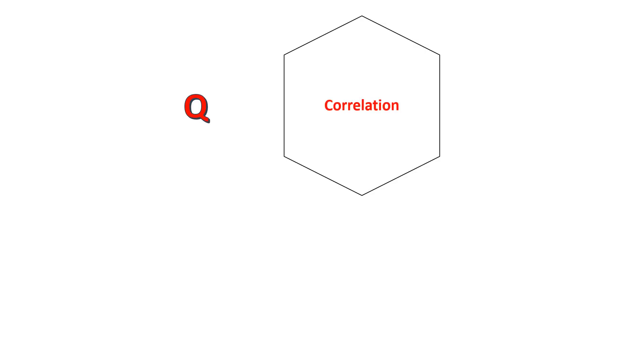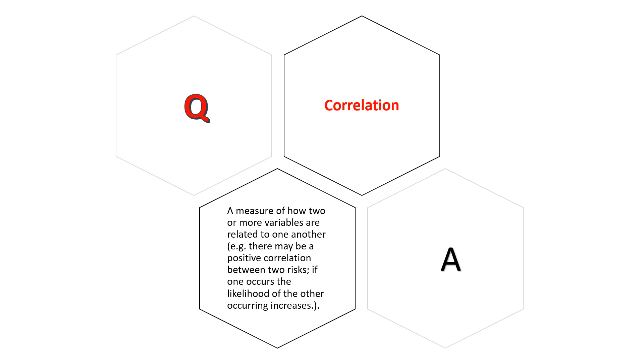Correlation: A measure of how two or more variables are related to one another. For example, there may be a positive correlation between two risks. If one occurs, the likelihood of the other occurring increases.